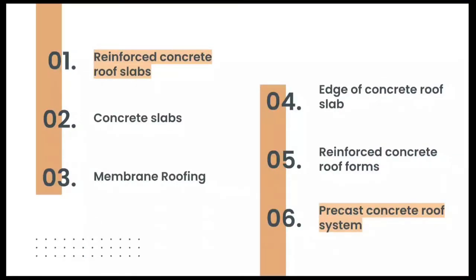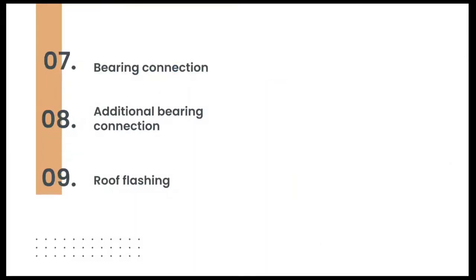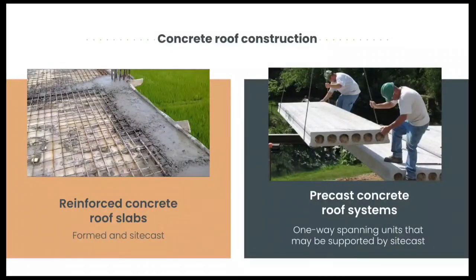First of all, we're going to explain about reinforced concrete roof slabs, concrete slabs, membrane roofing, edge of concrete roof slab, reinforced concrete roof forms, pre-cast concrete roof system, bearing connection, additional bearing connection, and the last one is roof flashing. Concrete roof construction is divided into two categories: reinforced concrete roof slabs and pre-cast concrete roof systems.